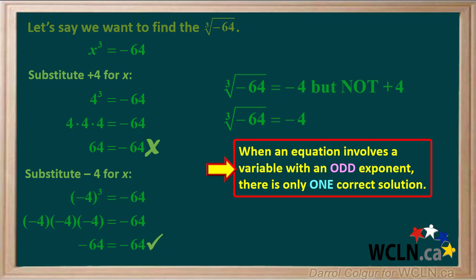We'll generalize by saying that when an equation involves a variable with an odd exponent, there is only one correct solution.